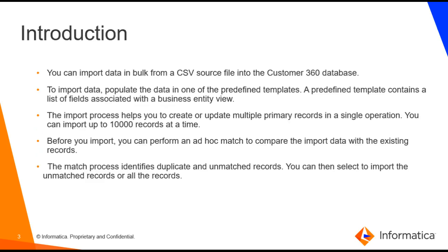Coming to the introduction — before we move on to ad-hoc matching, let us talk about when ad-hoc matching is used. In Customer 360 we have a feature called file import, which is similar to the IDD bulk import. Here you can import data in bulk from a CSV source file into the Customer 360 database. To import data, populate the data in one of the predefined templates. A predefined template contains a list of fields associated with a business entity view. The import process helps you to create or update multiple primary records in a single operation. You can import up to 10,000 records at a time.